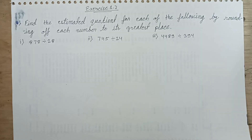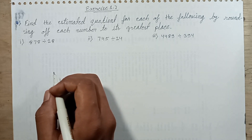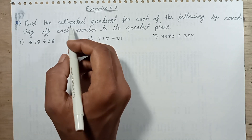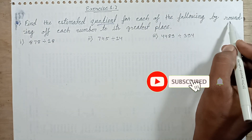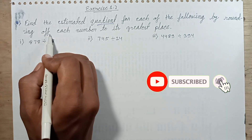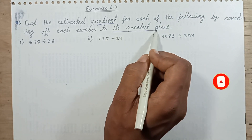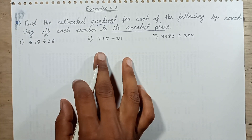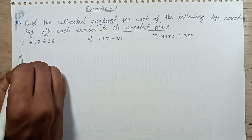Bande Matram everyone, welcome back to this episode. This episode discusses exercise 1.7, last question, question number 4: Find the estimated quotient for each of the following by rounding each number to its greatest place. Let's solve 3 factors in this question, one by one.